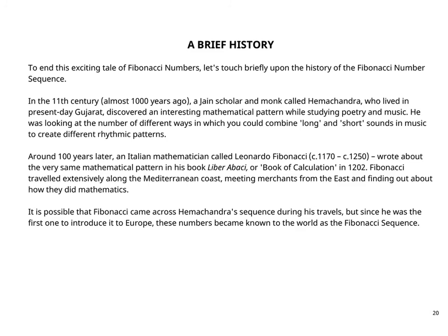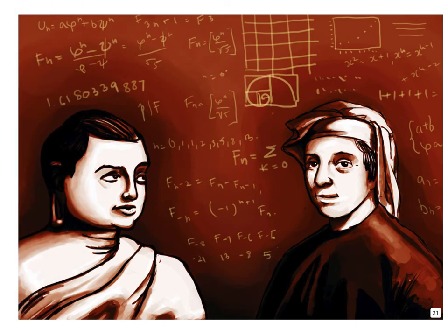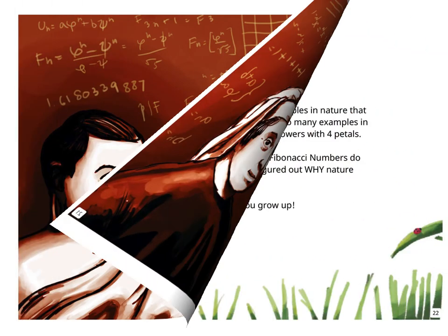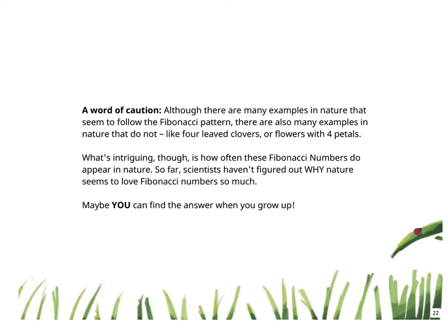A word of caution: Although there are many examples in nature that seem to follow the Fibonacci pattern, there are also many examples in nature that do not follow this pattern, like four-leaved flowers or flowers with four petals. What is intriguing though is how often these Fibonacci numbers do appear in nature. So far, scientists have not figured out why nature seems to love Fibonacci numbers so much. Maybe you can find the answer when you grow up. Wow!